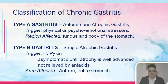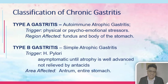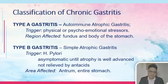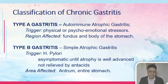In chronic gastritis, there are two classifications: Type A and Type B gastritis. Type A gastritis is commonly referred to as autoimmune atrophic gastritis. Its usual triggers are physical and psycho-emotional stressors, and the region affected is usually the fundus and body of the stomach. Type B gastritis is referred to as simple atrophic gastritis. The usual trigger is H. pylori. It is usually asymptomatic until the atrophy is well advanced and is not usually relieved by antacids. Although the entire stomach can be affected, the antrum is the initial site infected for Type B gastritis.